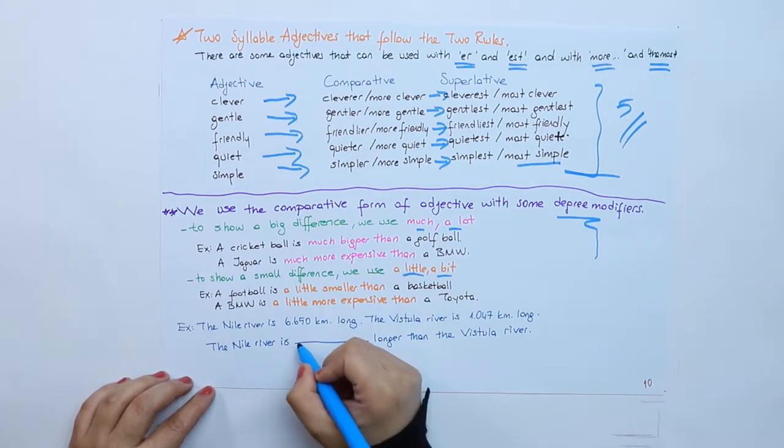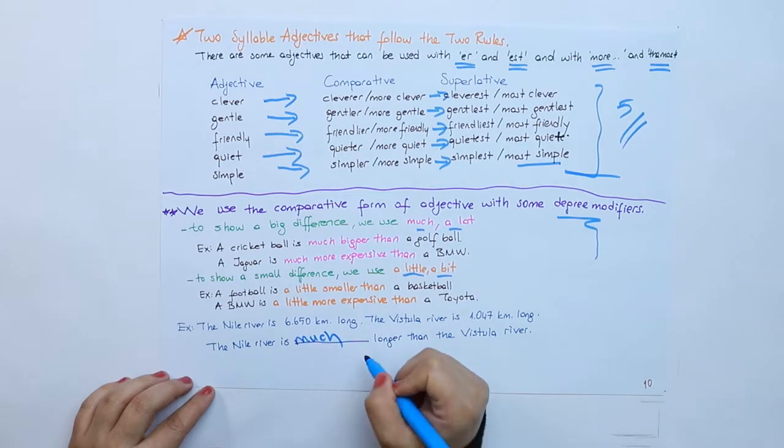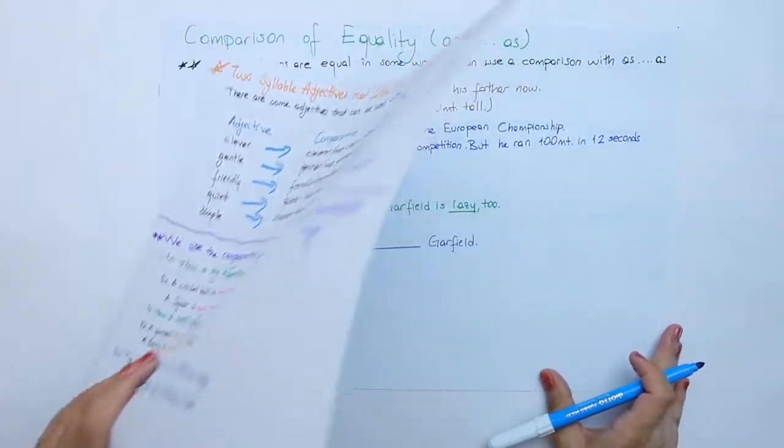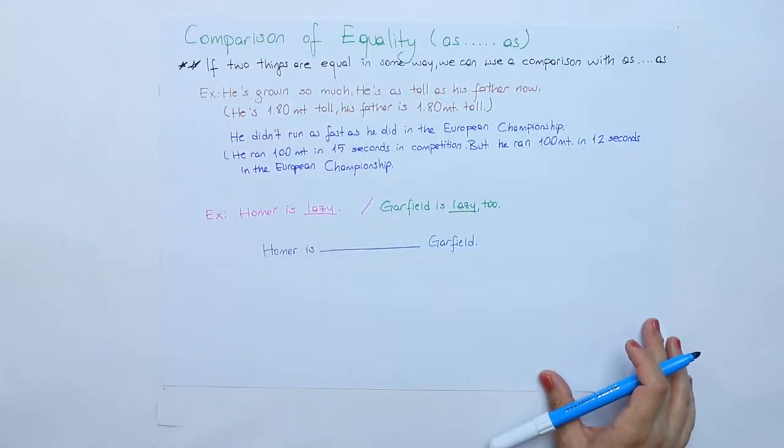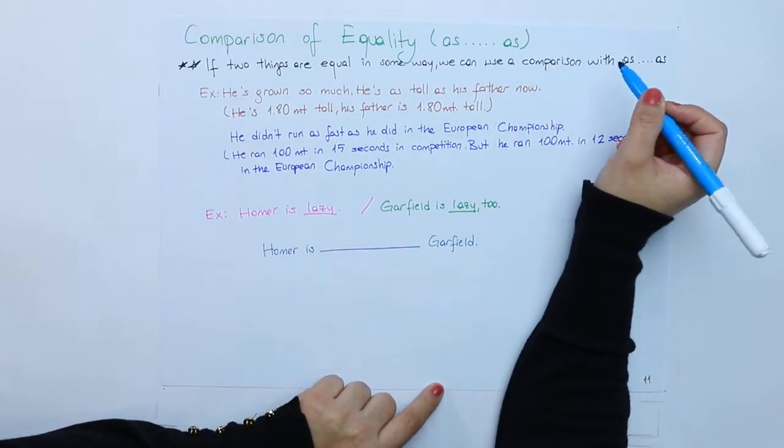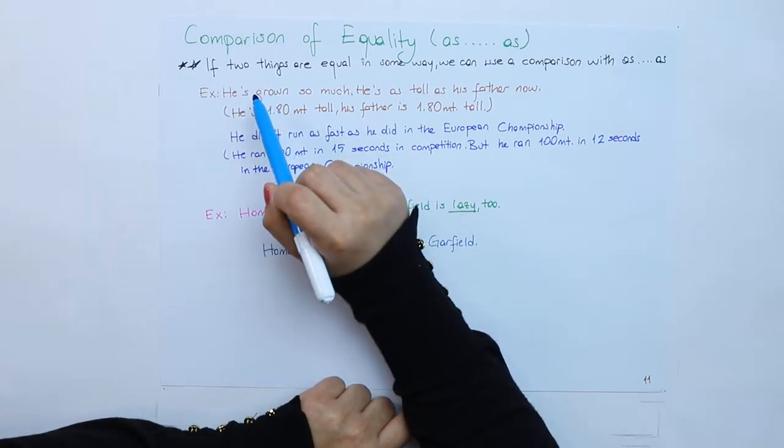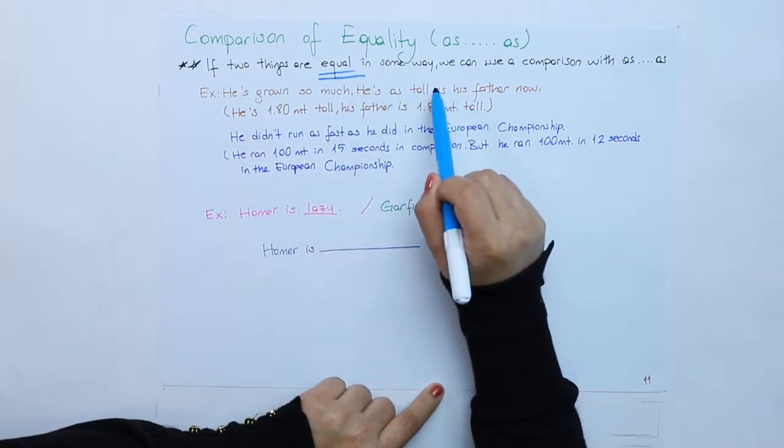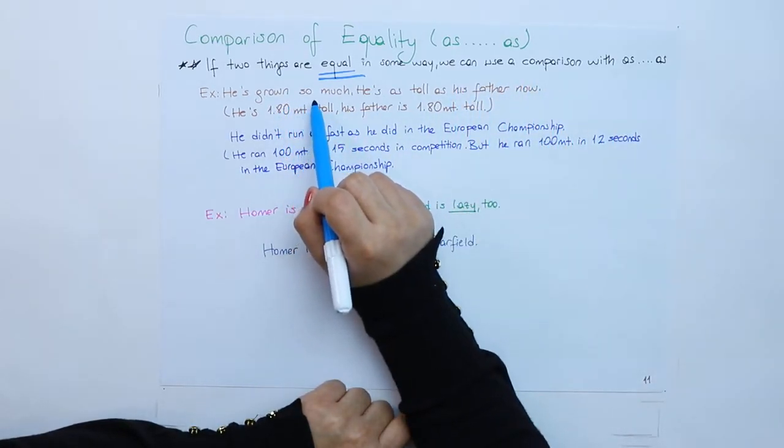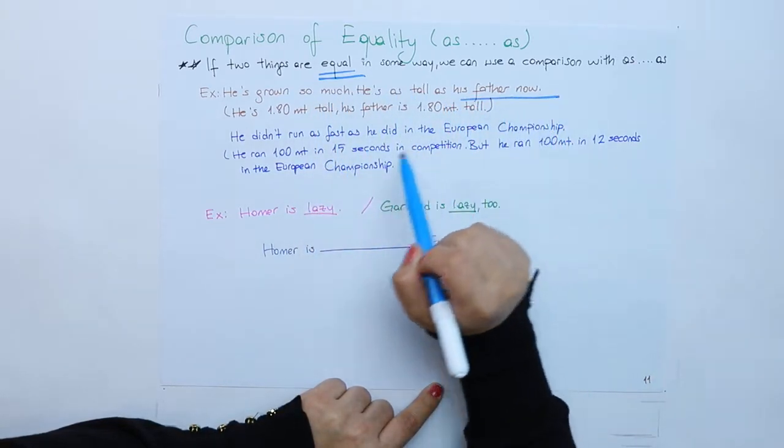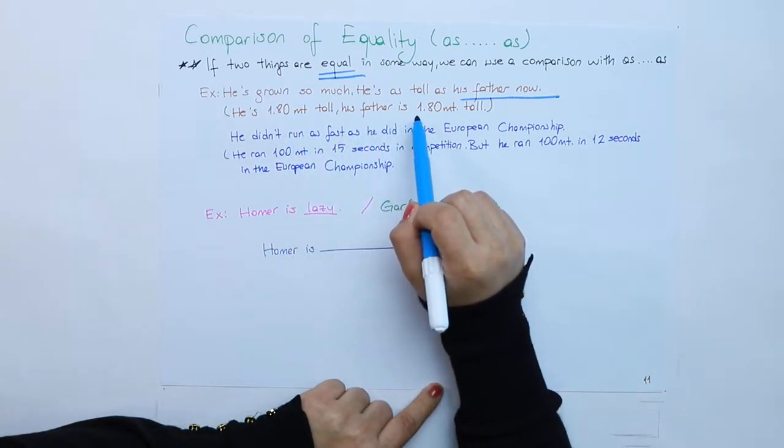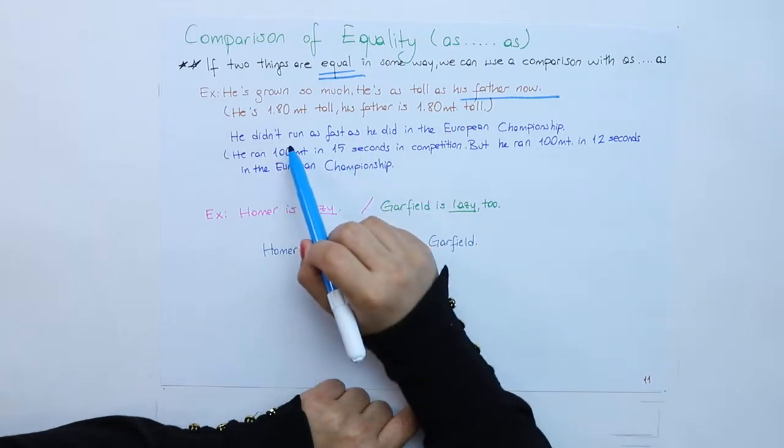When we move to equality like AS...AS, it shows that if two things are equal in some way we can use a comparison with AS...AS. He is grown so much, he is as tall as his father now. He is 180, his father is 180 as well.